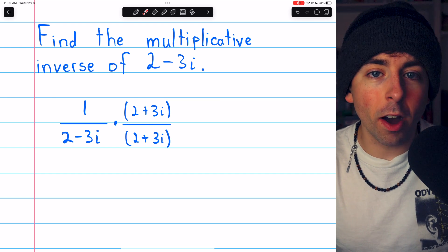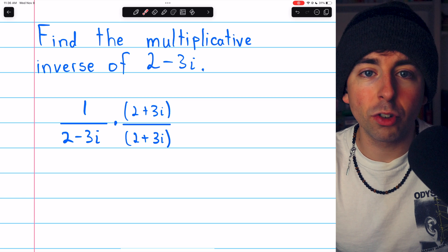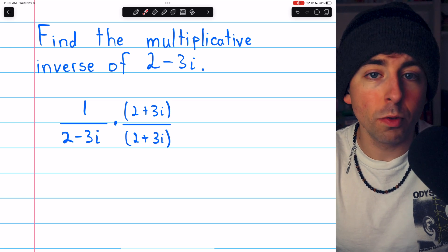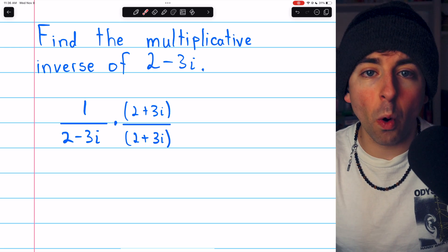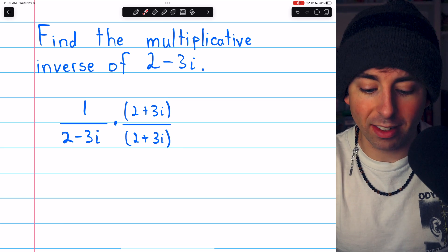And the advantage of the conjugate is that it's going to turn out to just give us the difference of squares. 2 minus 3i times 2 plus 3i is just 4 minus 3i squared. So let's see what this equals.